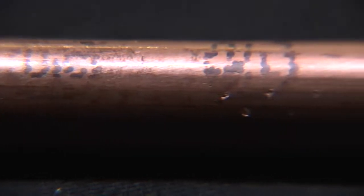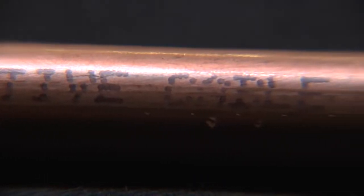Copper sheathed MI power cables are classified by UL and ULC as two-hour fire resistive, and the improper termination of the cable can jeopardize its integrity and reliability.